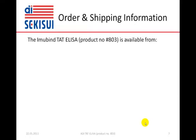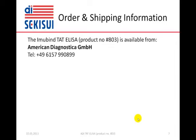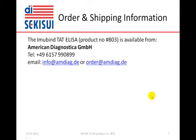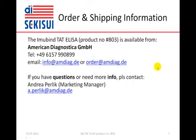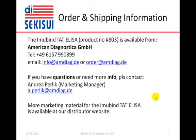Order and shipping information: the Immubind TAT ELISA is available from American Diagnostica's German subsidiary, American Diagnostica GmbH. The contact telephone number is shown here. You may use email to info@mdiag.de or order@mdiag.de. For more specific questions, please contact Andrea Perlick, our marketing manager, at a.perlick@mdiag.de. More marketing material for the Immubind TAT ELISA is also available at our distributor website, adg-distributors.de.